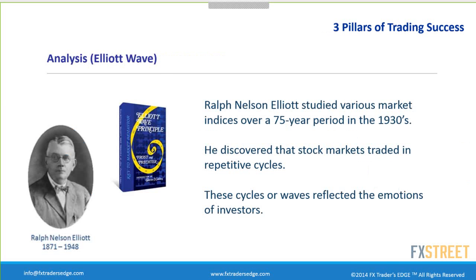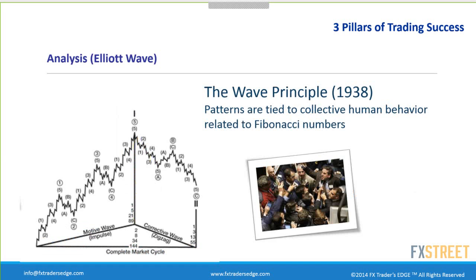Ralph Nelson Elliott studied various market indices over a 75-year period in the 1930s. While he was bedridden, he poured over thousands of stock market data — with no computers — and discovered that the stock markets traded in repetitive cycles. These cycles, or what he called waves, reflected the emotions of investors. This is what came about from his research: the eight-wave cycle, now called the Elliott Wave principle, with crowd behavior impacting the market.